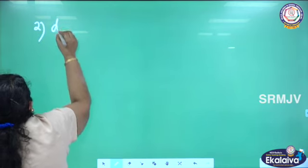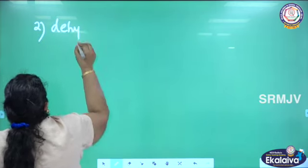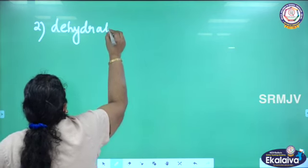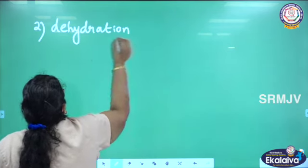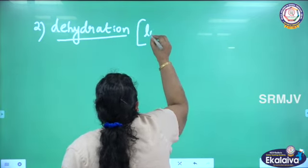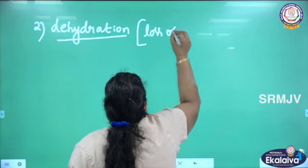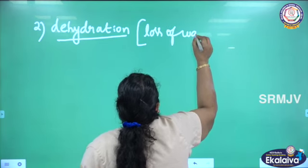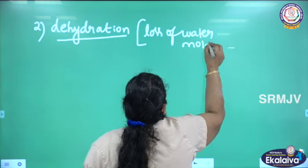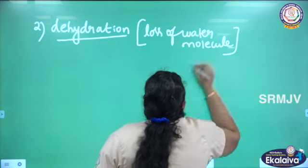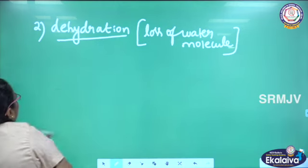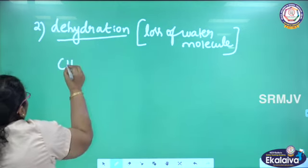This is the first test. The second property we are going to talk about is dehydration. What is dehydration? Loss of water molecule. We can call it dehydration — loss of water molecule.